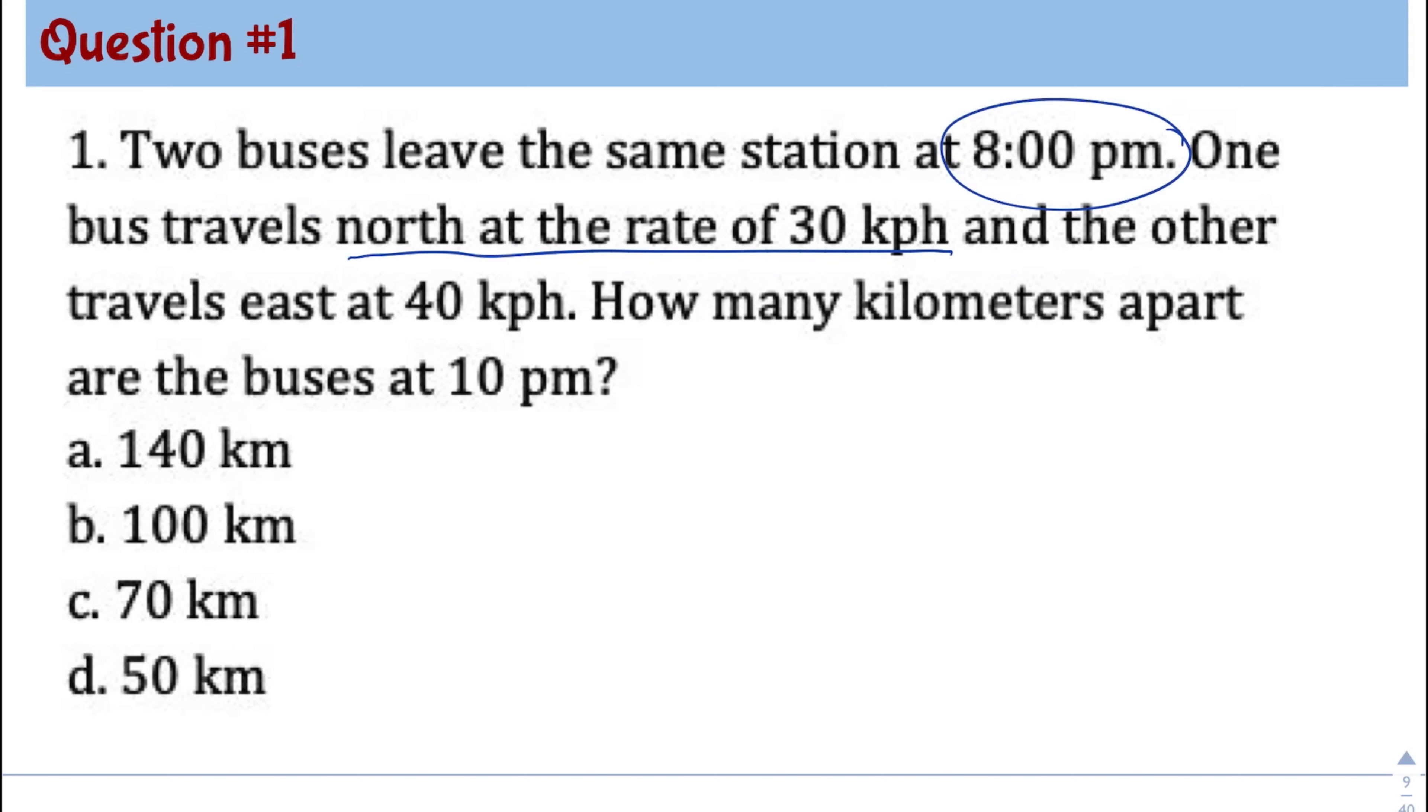And the other travels east at 40 kph. How many kilometers are the buses at 10 p.m.? So in this problem, we know that two buses traveled for two hours from 8 p.m. to 10 p.m. So let's assume that this point is the starting point.